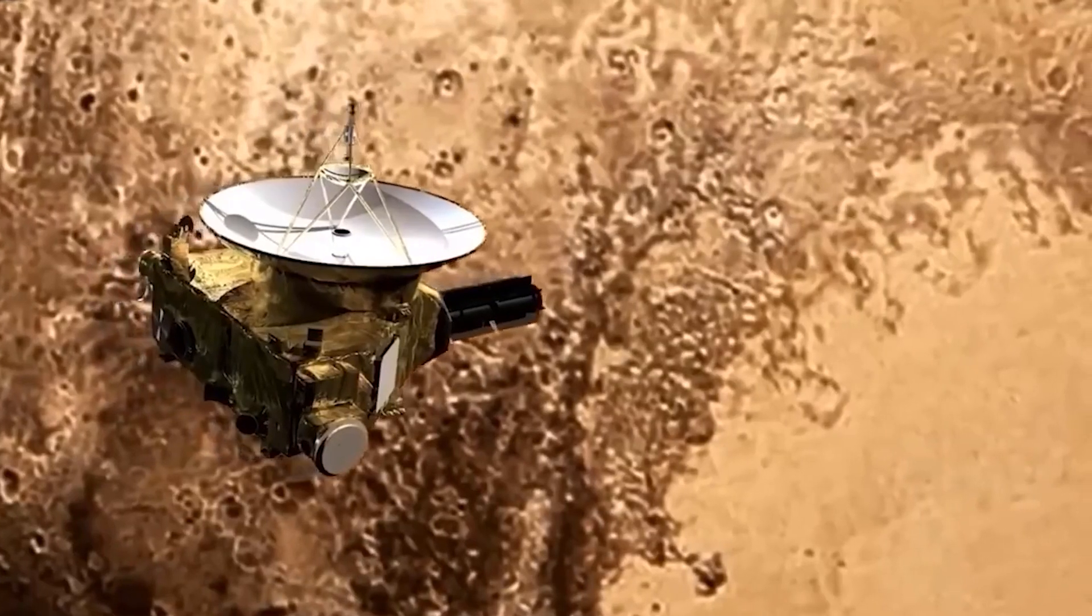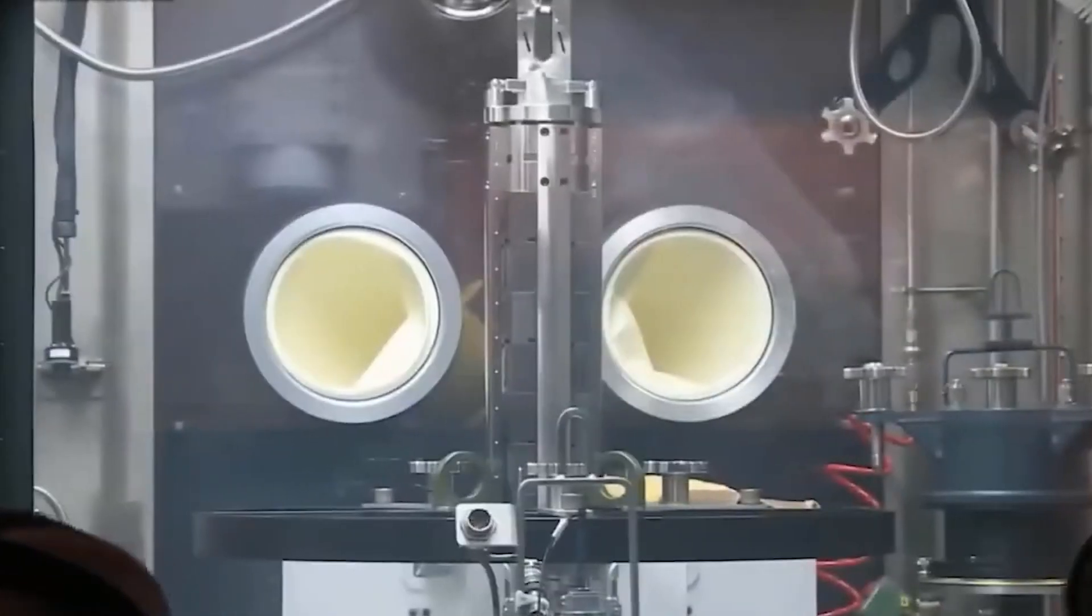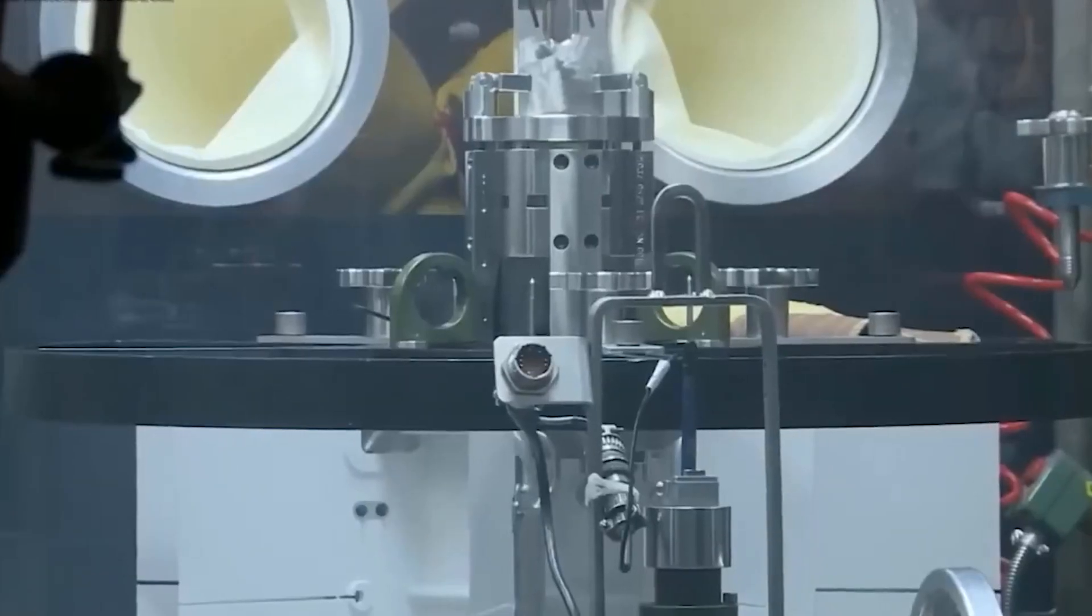Voyager 1 and 2 were launched 16 days apart in 1977. At least one of the spacecraft has visited Jupiter, Saturn, Uranus, and Neptune.